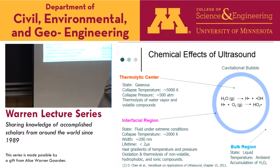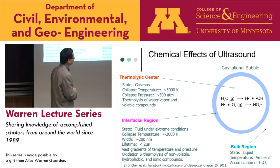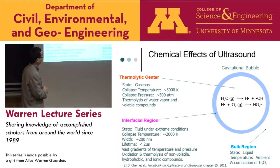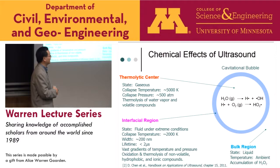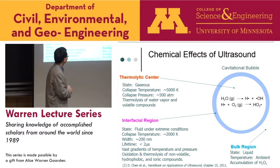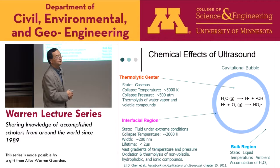Let's look at the diagram of a cavitational bubble — it produces chemical effects. At the center of the cavitational bubble, during collapse, it can generate temperatures of about 5,000 K and pressures of 500 ATM. Under such high temperature and pressure, water vapor along with volatile compounds can be thermalized. The thermolysis of water vapor produces OH radicals, which are a major player in advanced oxidation processes.